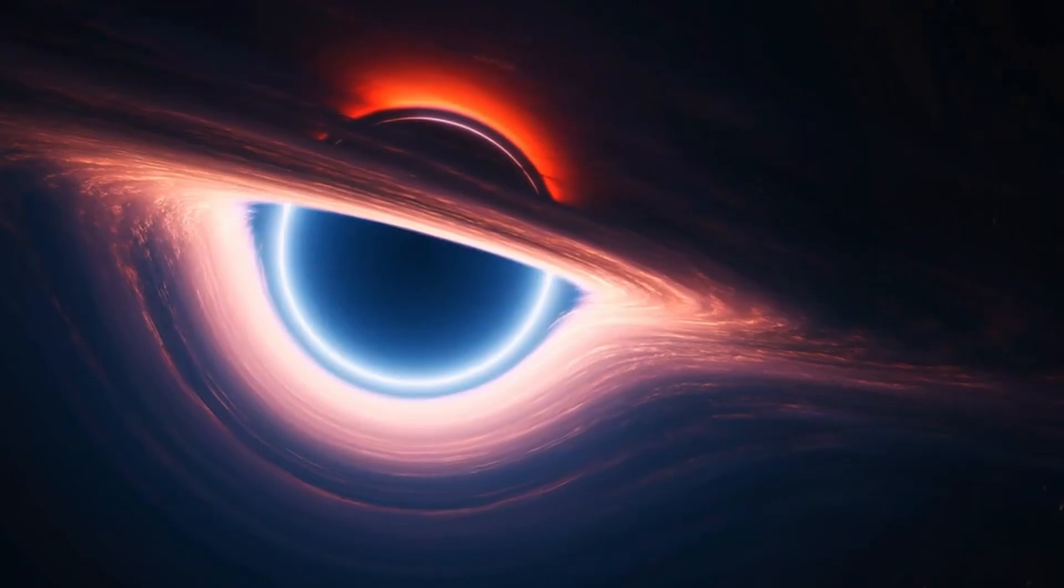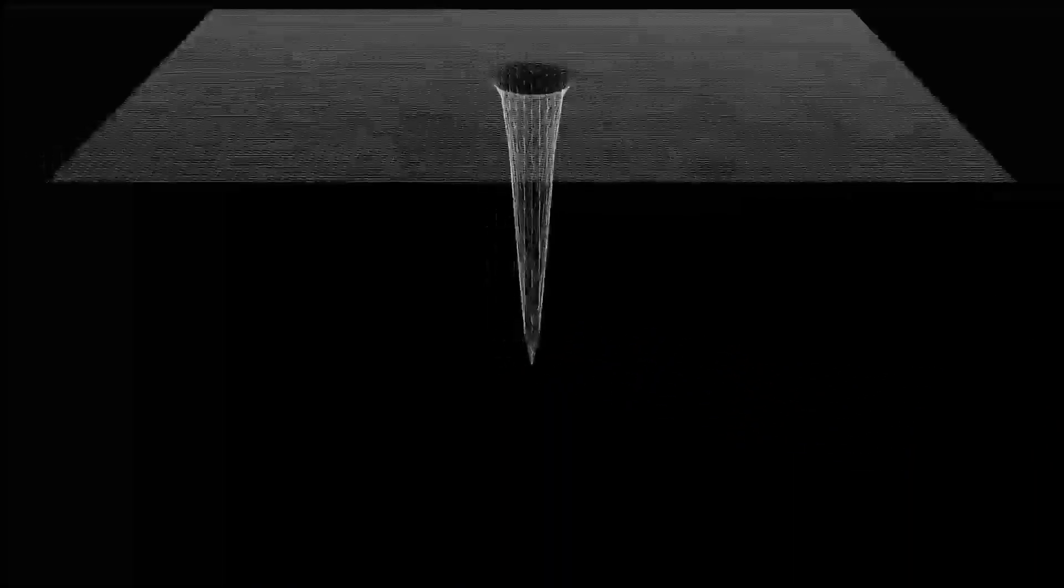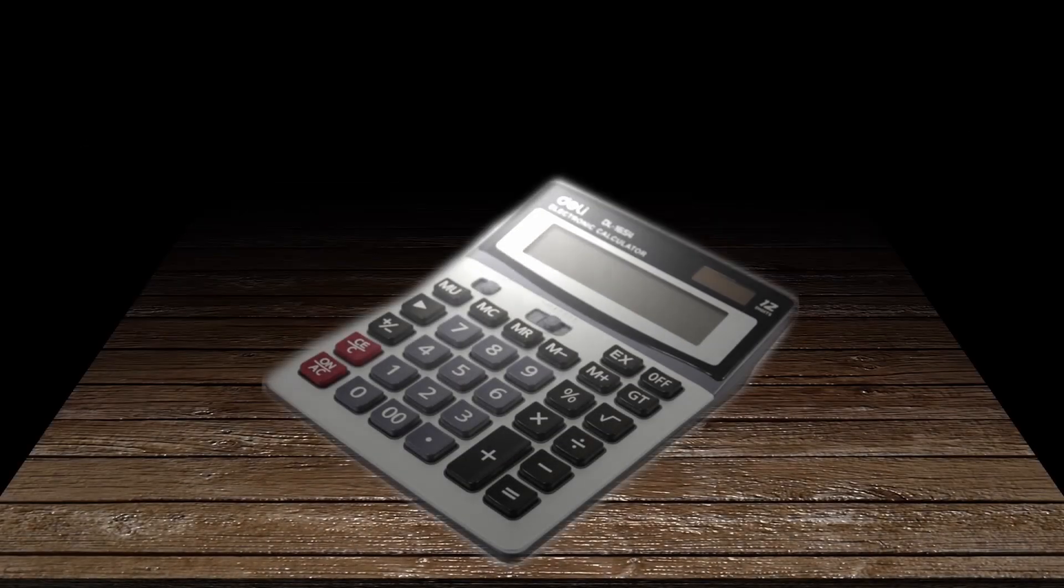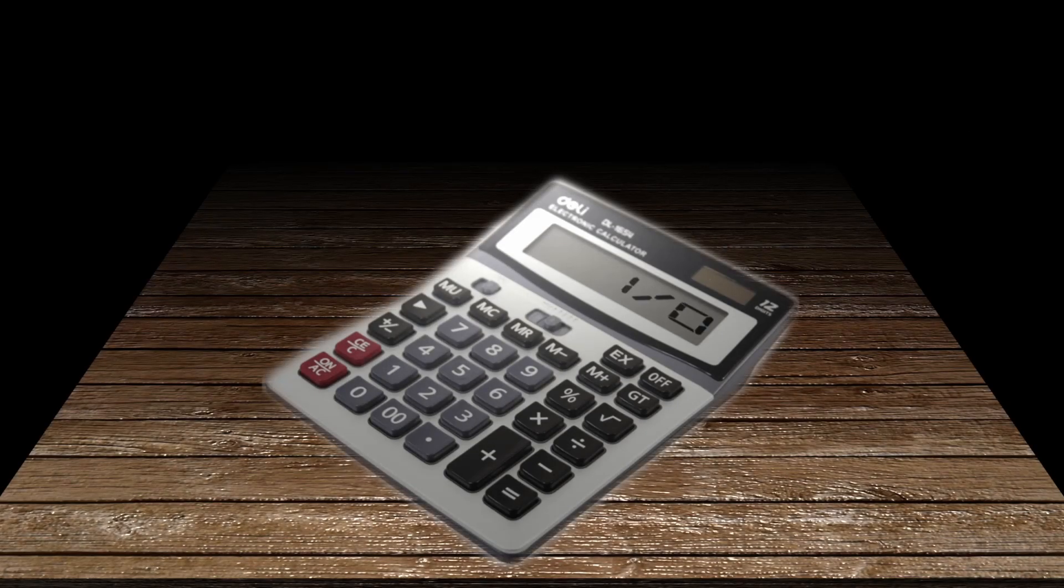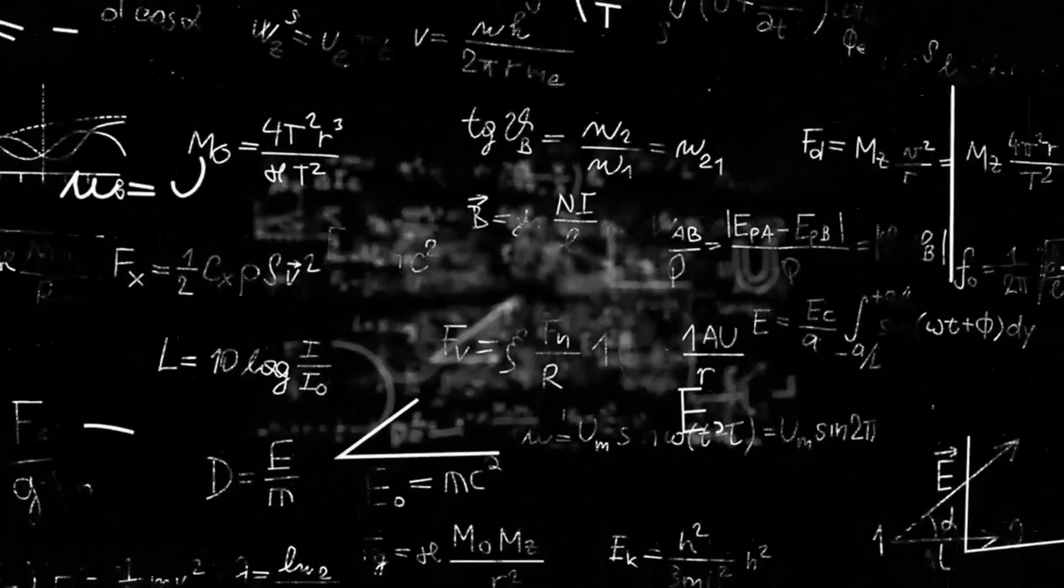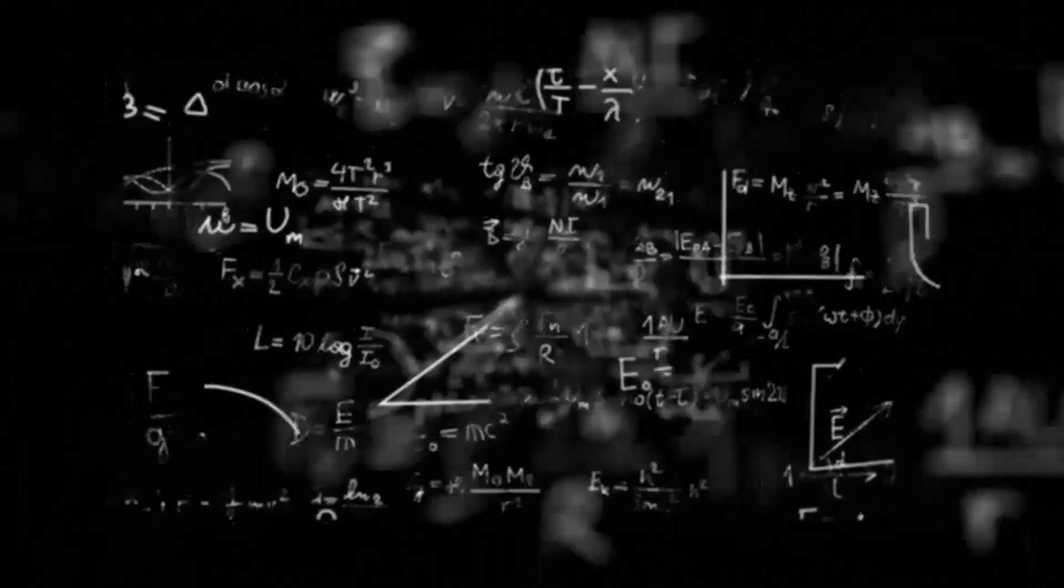Let's start with the basics. What exactly is a singularity? In simple terms, a singularity is a point in space where the normal laws of physics completely break down. Think of it like this: imagine trying to divide a number by zero on your calculator. Your calculator would give you an error message, because mathematically this operation doesn't make sense. A singularity is nature's version of that error message.